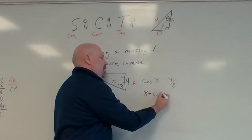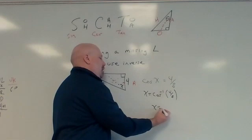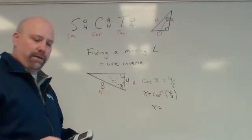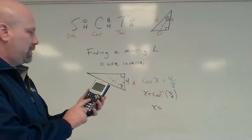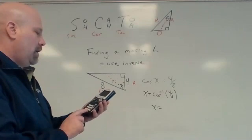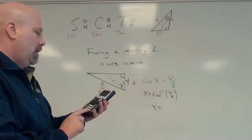And so I take my calculator. For most calculators, you're going to have to hit a second button. And so for this calculator, I hit second. And then right above cosine is the little cosine to the negative one, which means inverse cosine. And I type it in, and it tells me that it's 60 degrees. I worked that nice and even. And that is how I find a missing angle.